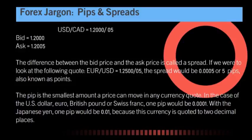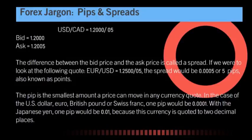A pip is also known as a point. Although these movements may seem insignificant, even the smallest point change can result in thousands of dollars being made or lost due to leverage. This is one of the reasons why speculators are so attracted to the forex market — even the tiniest price numbers can result in a huge profit. The pip is the smallest amount a price can move in any currency quote. For the US dollar, Euro, British pound, or Swiss franc, one pip would be 0.0001. With the Japanese yen, one pip would be 0.01, because this currency pair is only quoted out to two decimal places. So in a USD/CHF forex quote, for example, the pip would be 0.0001 Swiss franc.